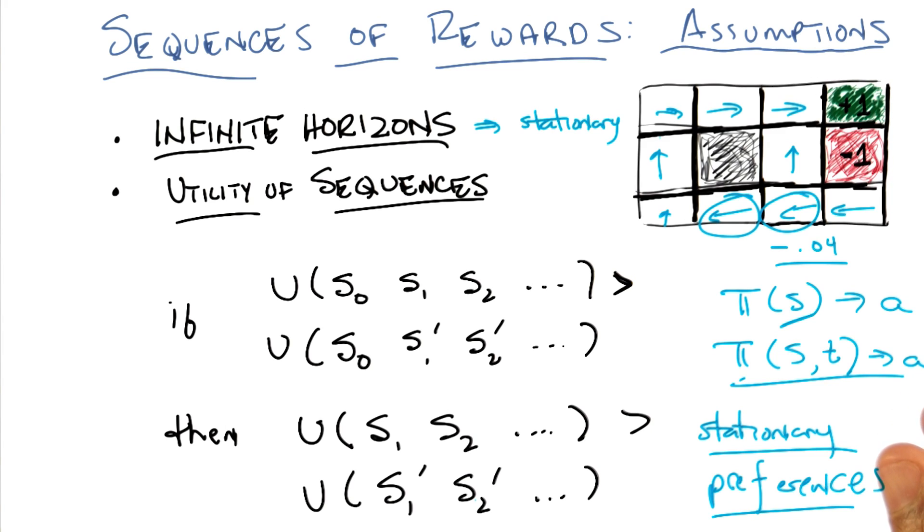I thought that's what we were doing. That's right. That is what we were doing. But we never actually sat down and wrote that down and said, this is what it means to talk about the utility of a sequence of states as opposed to the reward that you get in one state. Okay, so you're saying that if we are adding rewards, then this follows. Right. Okay.